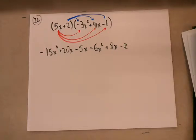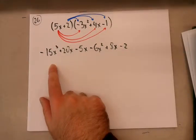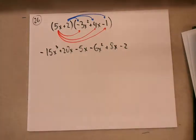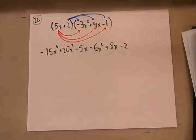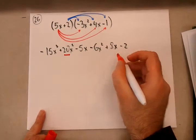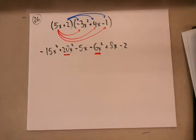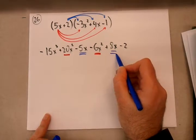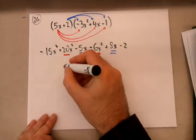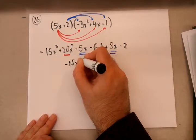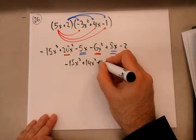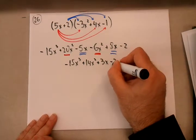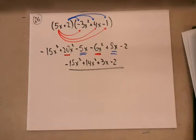Now I combine anything of the same degree. The third degree has no counterpart. The zero degree has no counterpart. But the second and first degrees have counterparts: 20x squared and negative 6x squared combine to positive 14x squared, and 8x and negative 5x combine to positive 3x. So the answer is negative 15x cubed plus 14x squared plus 3x minus 2.